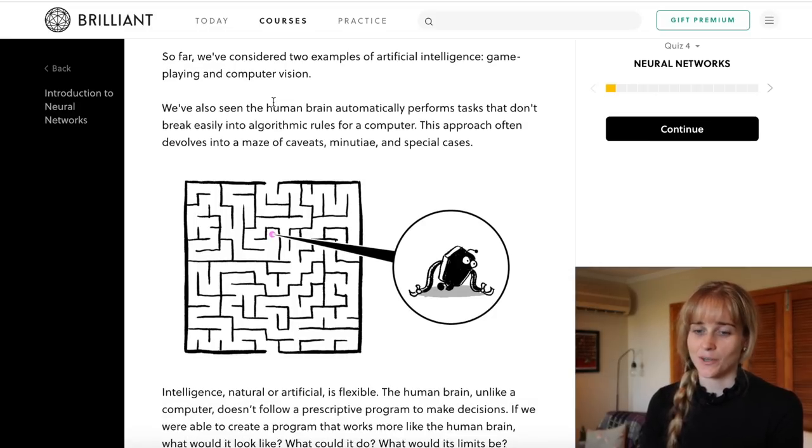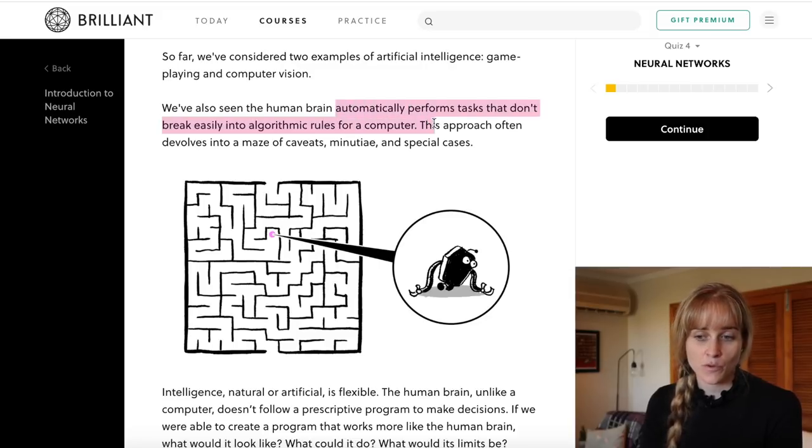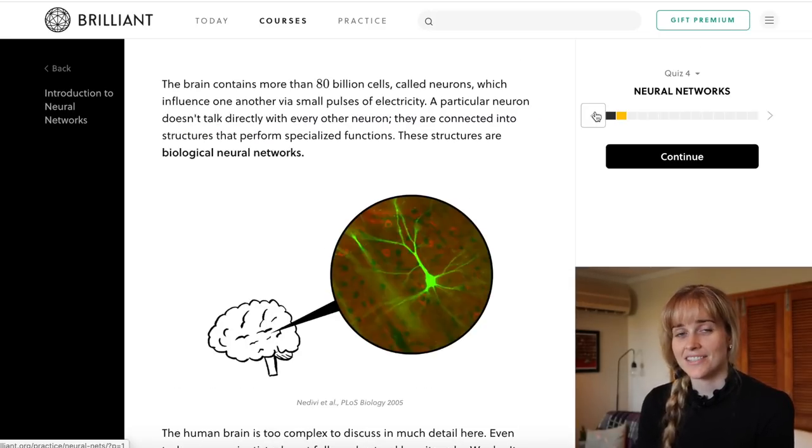It's not such an easy job because as it says here, the human brain automatically performs tasks that don't break easily into algorithmic rules for a computer to follow. So to create an intelligence that resembles that of a human, what we're trying to do in neural networks is kind of model the way that the brain is structured, and that is with neurons.